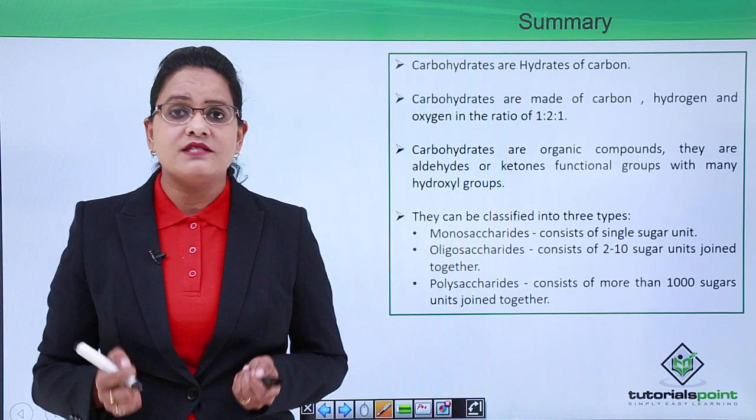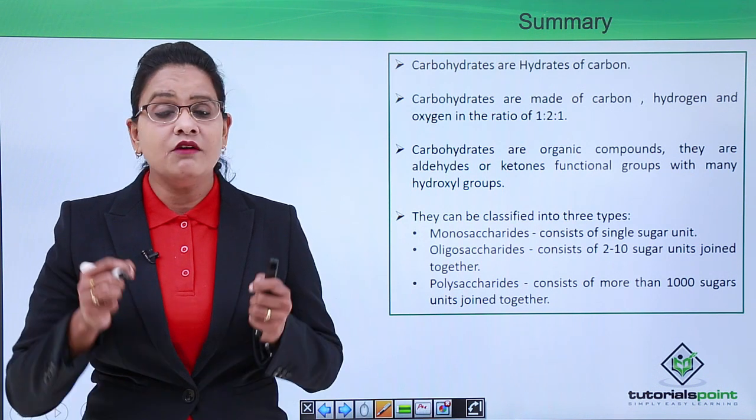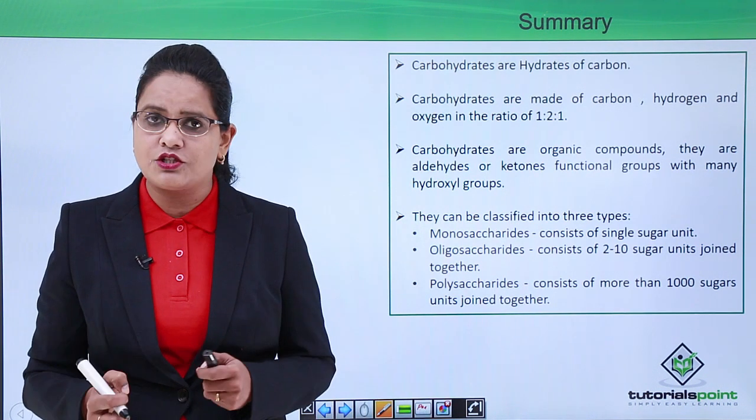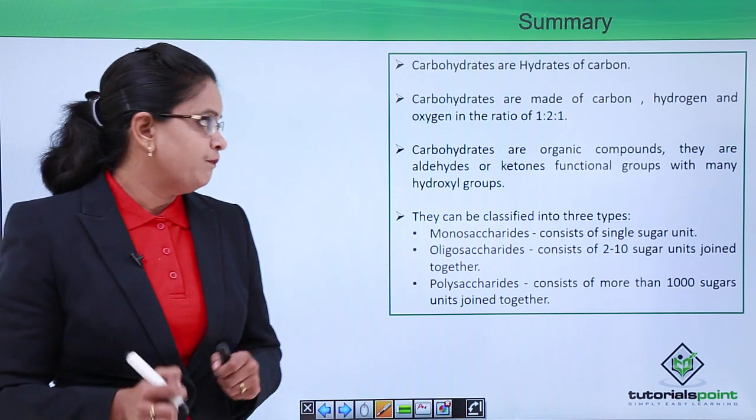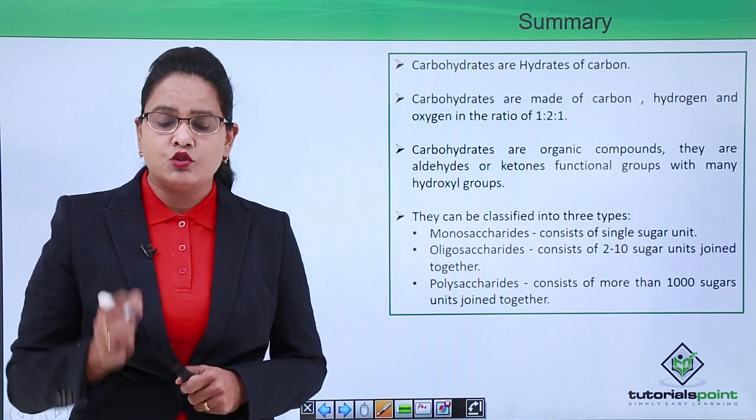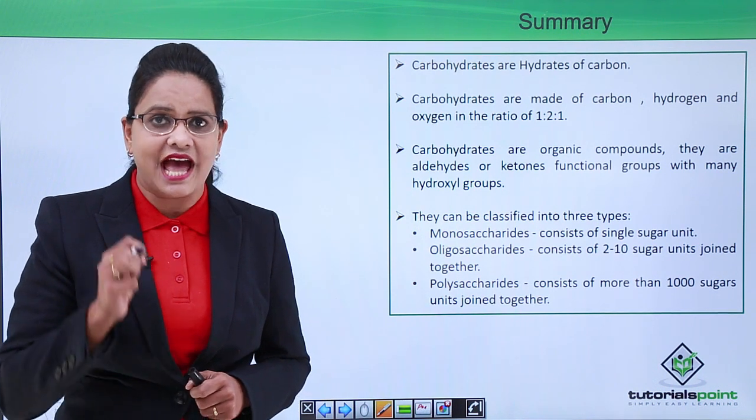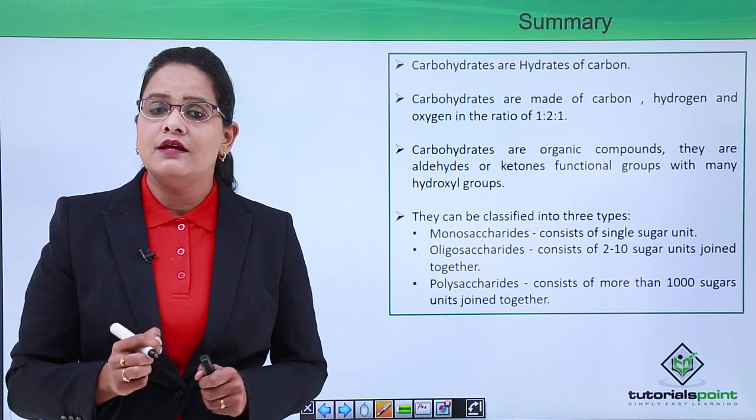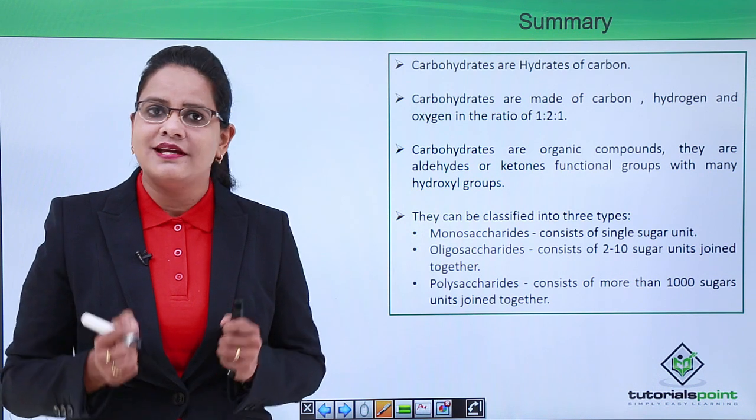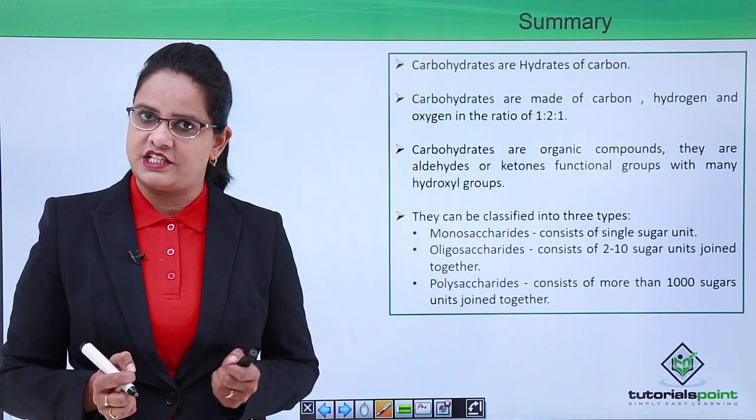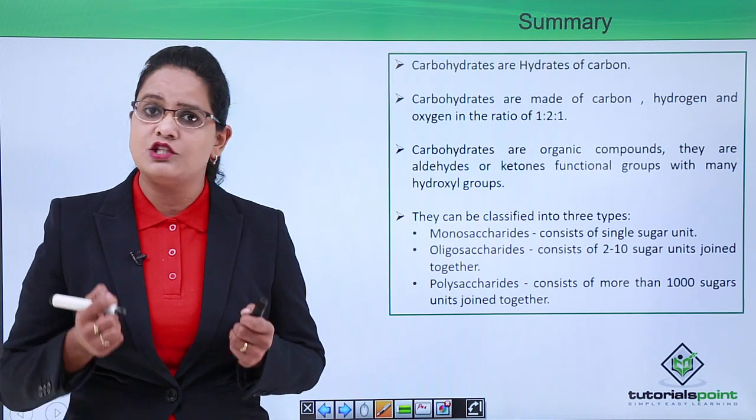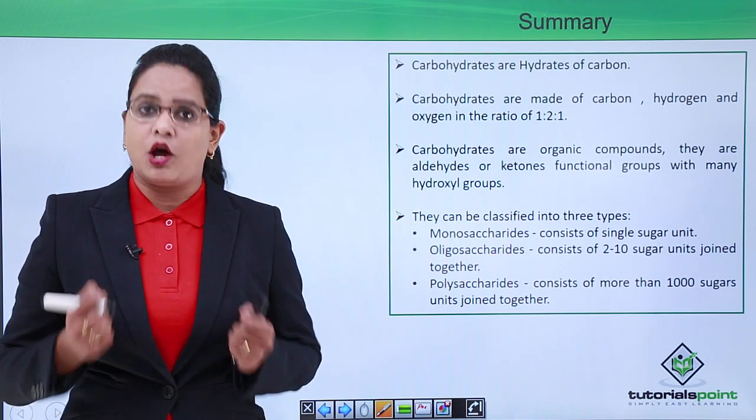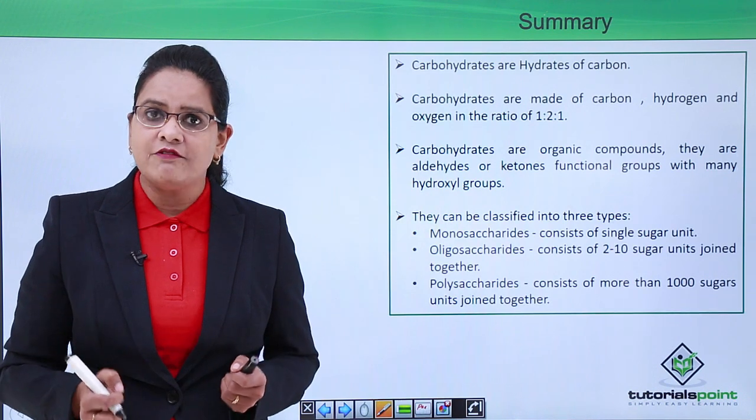So to wrap up, we can say that carbohydrates are hydrates of carbon which have carbon, hydrogen, and oxygen in the ratio of 1:2:1. They are organic compounds which are poly hydroxy aldehydes as well as ketones. And on the basis of sugar units they can be classified into three types: monosaccharides—one sugar unit, disaccharides—two sugar units, and polysaccharides which have many sugar units.